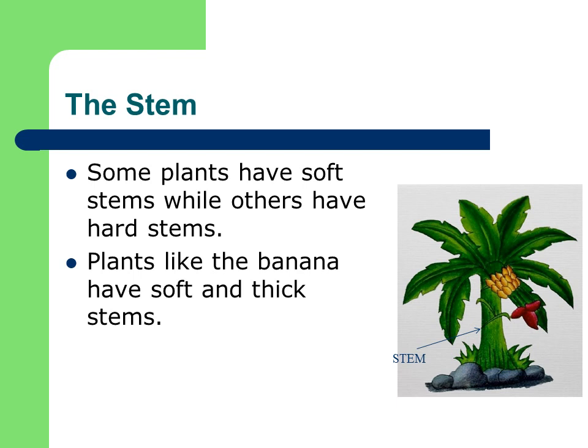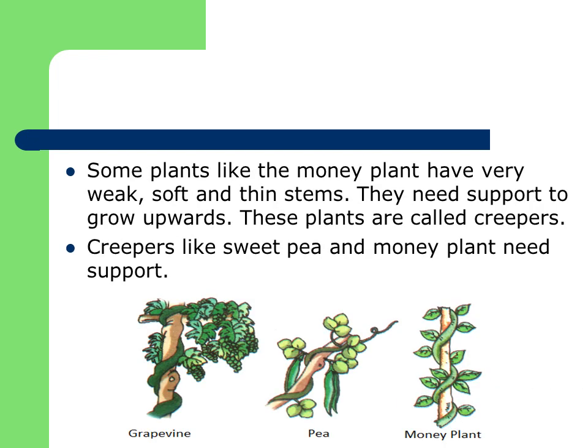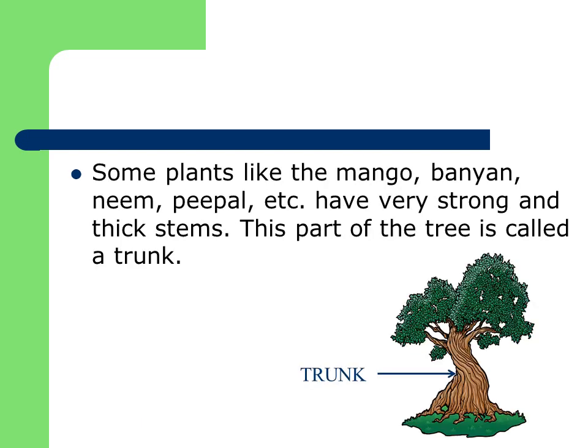The stem. Some plants have soft stems while others have hard stems. Plants like banana have soft and thick stems. Now some plants like the money plant have very weak, soft and thin stems — they need support to grow upwards. These plants are called creepers. Creepers like sweet pea and money plant need support. Some plants like mango, banyan, neem, peepal etc. have very strong and thick stems. This part of the tree is called a trunk.